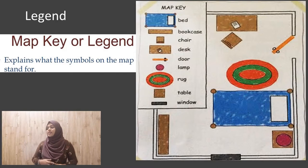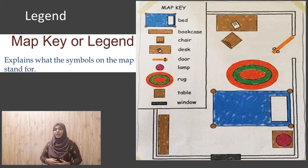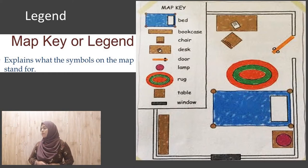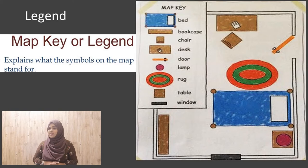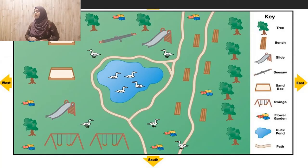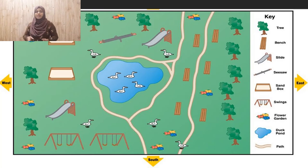Now let's see the legend. The legend, or map key, explains what the symbols on the map stand for. Here on the right side is a map, and on top is the map key — it shows bed, bookcase, chair, desk, door, lamp, rock, table, window. What type of map is this? Yes, it is a bedroom map! And what about this one? The key shows tree, bench, slide, seesaw, sandbox, swings, flower garden, duck pond — that's correct, this is a park map.